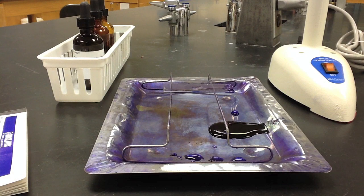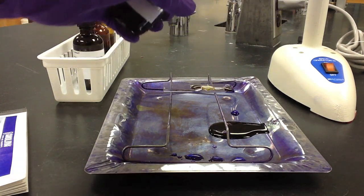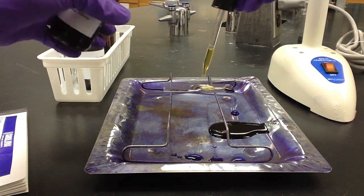Once we've rinsed off all of the crystal violet, we then add Gram's iodine to the surface of the slide. Once we've fully covered the sample, we'll let the slide incubate at room temperature for one minute.